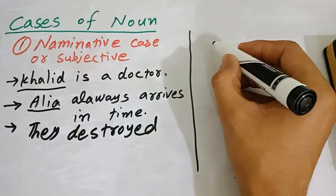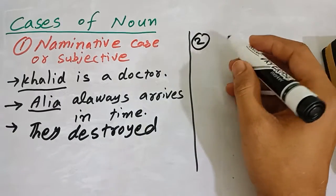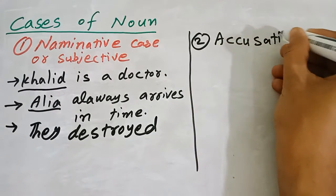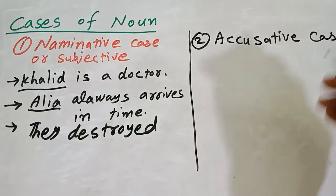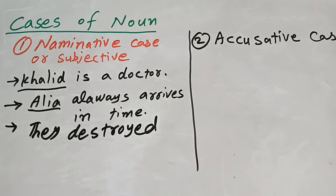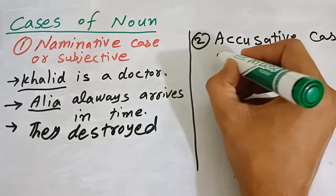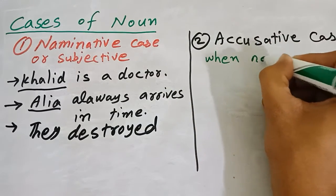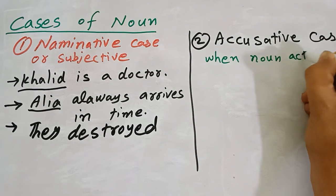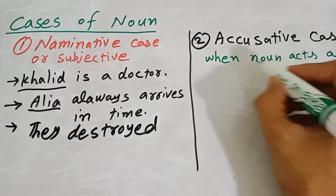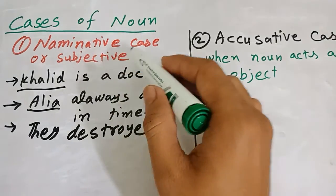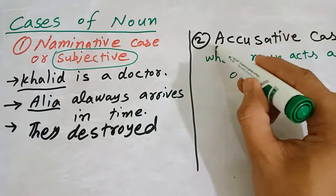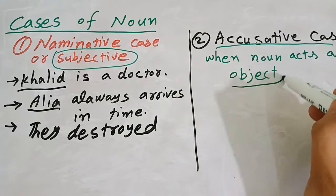Now I will discuss the second case, which is the accusative case. It is the case of noun when it denotes the object of a verb. When a noun acts as an object, it is called the accusative case. In the nominative case, the noun acts as subject, but in the accusative case, the noun acts as object of a verb.